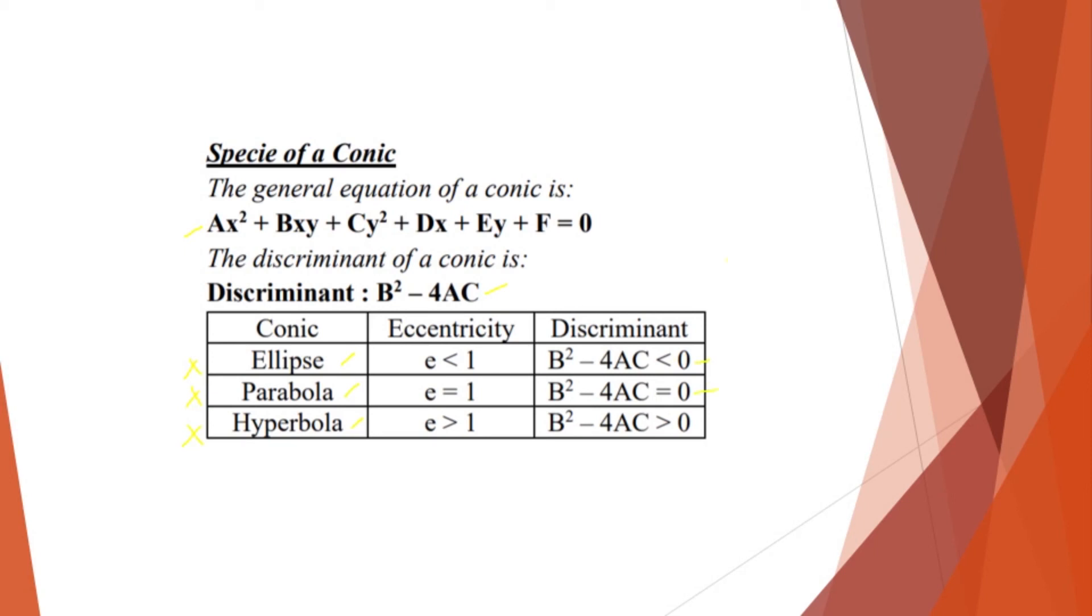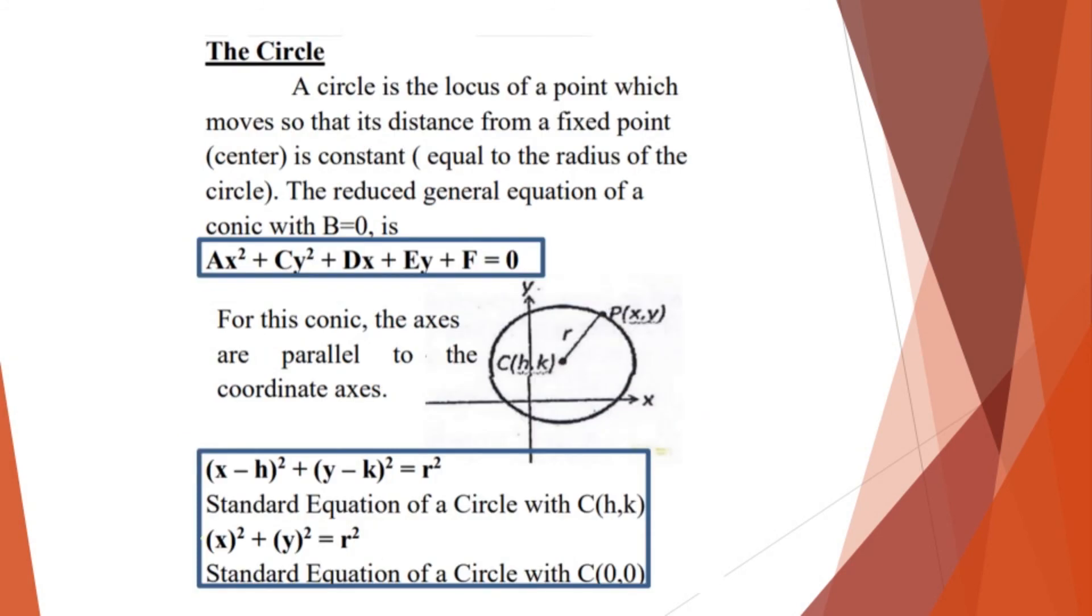So a circle is a locus of a point which moves so that its distance from a fixed point center is constant, which is equal to the radius of a circle. So meaning, guys, so if you have this circle here, so your circle is consist of points. So that is consist of points, but this point should have a constant distance. And that distance is the radius. So from this center, to this locus of points, so dapat ang distance natin dyan is distance r.